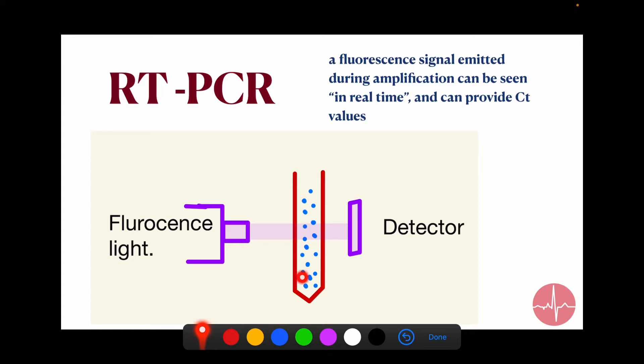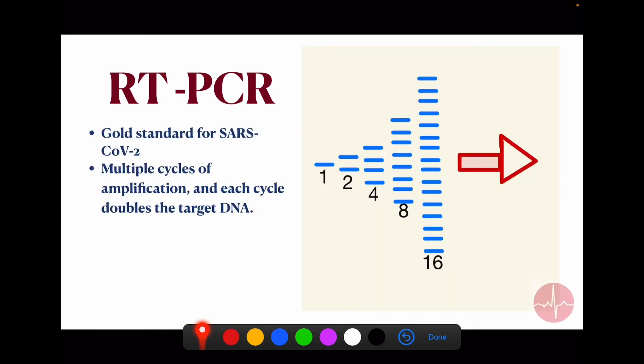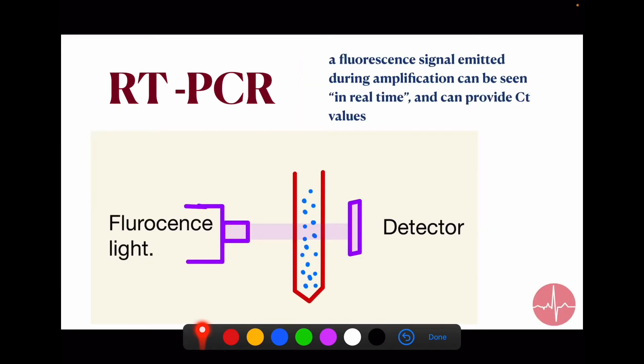Suppose we have a test tube. In the test tube we have nucleic acid material plus a fluorescence probe. When we reach the detectable level, that probe will reflect the fluorescent light in the detector. So a fluorescent signal emitted during the amplification can be seen in real time. That's why it is called real-time polymerase chain reaction.